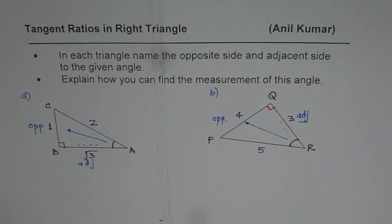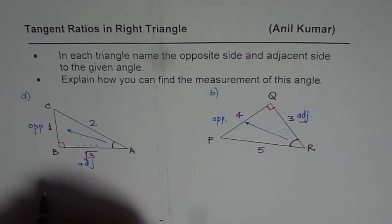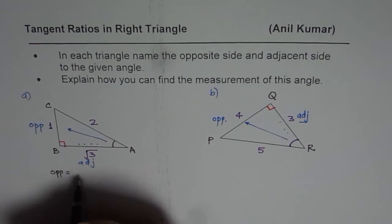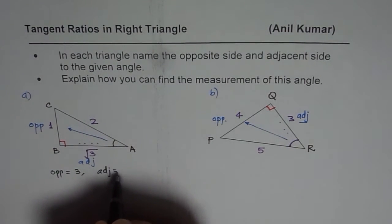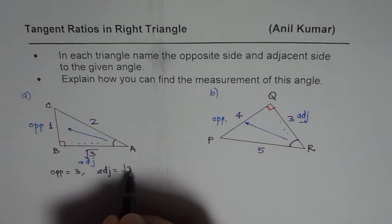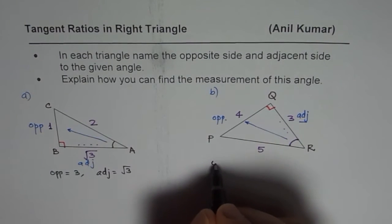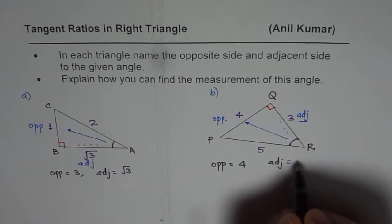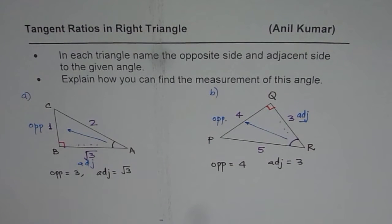For the first triangle, the opposite side is equal to 1 and the adjacent side is equal to square root of 3. In the second triangle, the opposite side is equal to 4 and the adjacent side is equal to 3. That is the answer to the first part for both these questions.